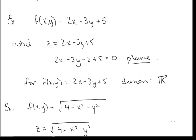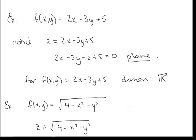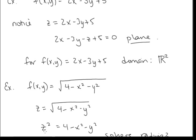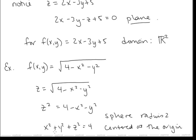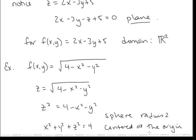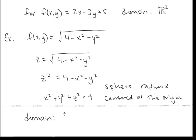Let's take a look at another example: f(x, y) = √(4 − x² − y²). First, let's talk about what kind of surface this is. If we let f(x, y) = z and square both sides, we recognize that this is the sphere of radius 2 centered at the origin. Now, we need to find the domain. Anything under a radical needs to be greater than or equal to zero, so 4 − x² − y² ≥ 0.